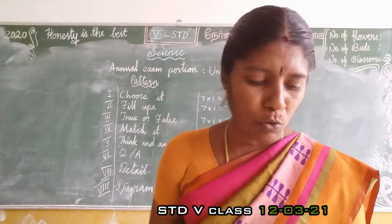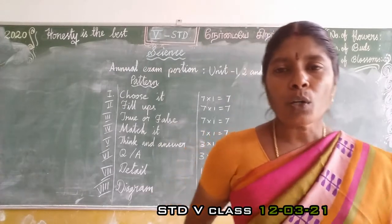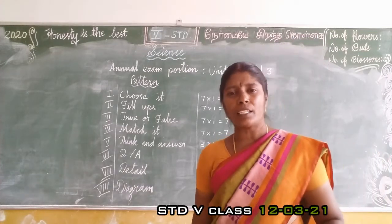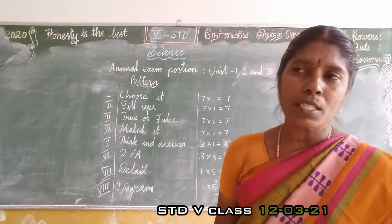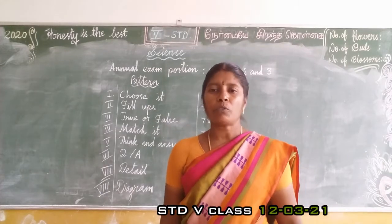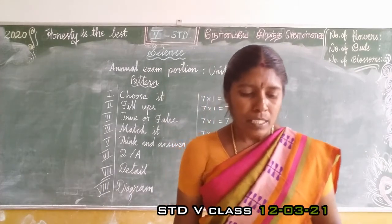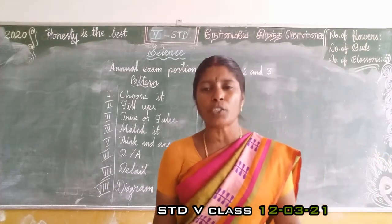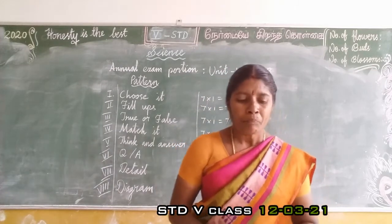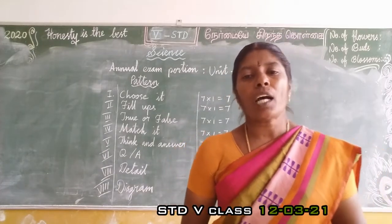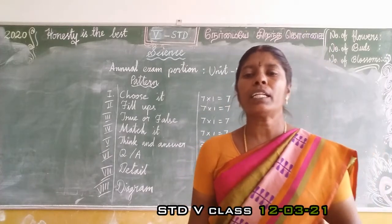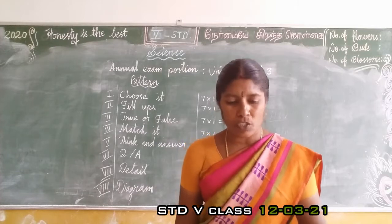First, chlorofluorocarbon - CFC - is used in refrigerators and air conditioners. So the answer is both. Second question: which of the following gases are released by automobiles? The answer is carbon monoxide. Then, a windmill is used to produce electric energy.